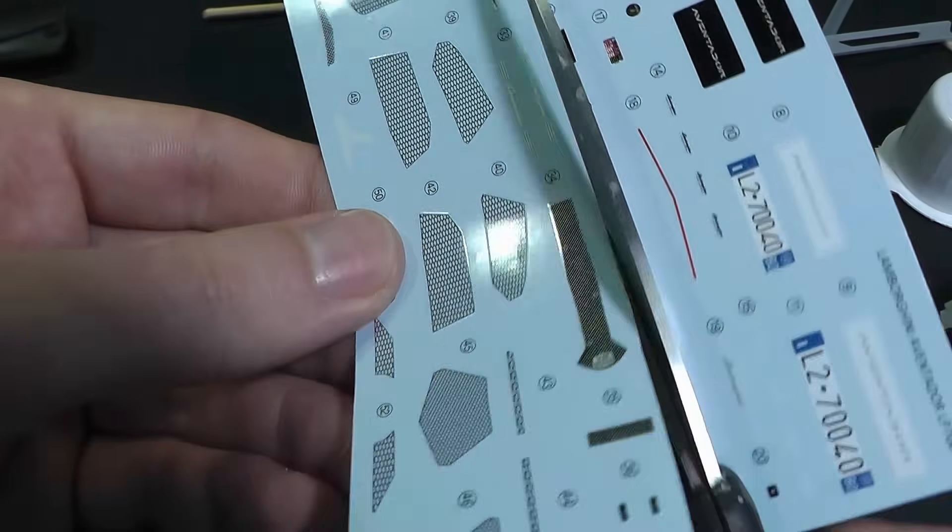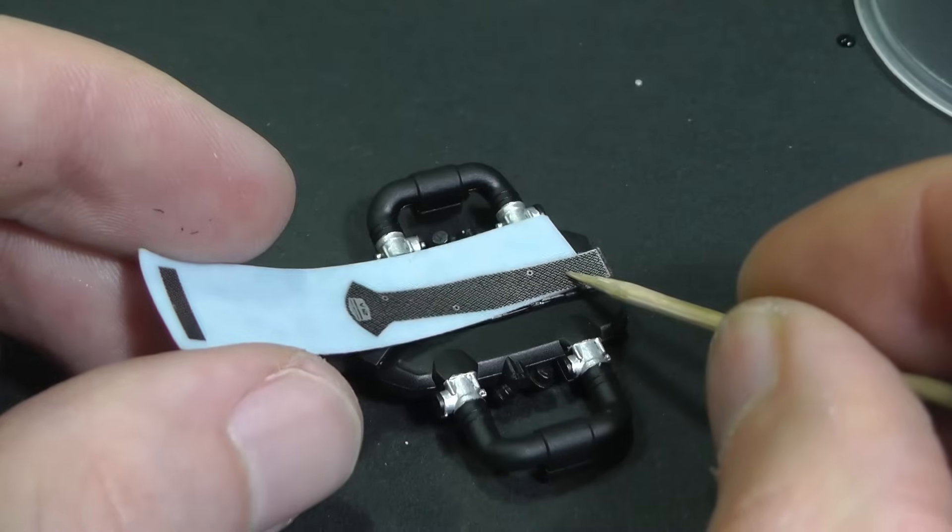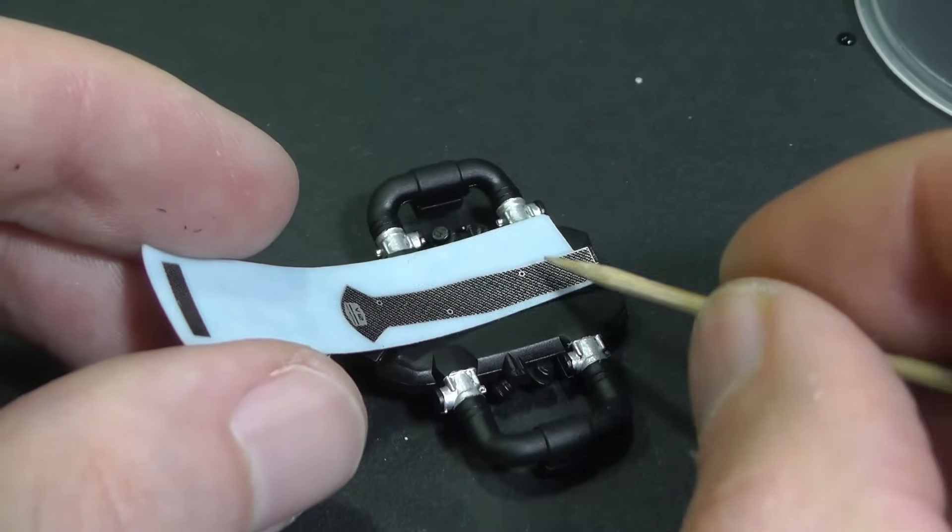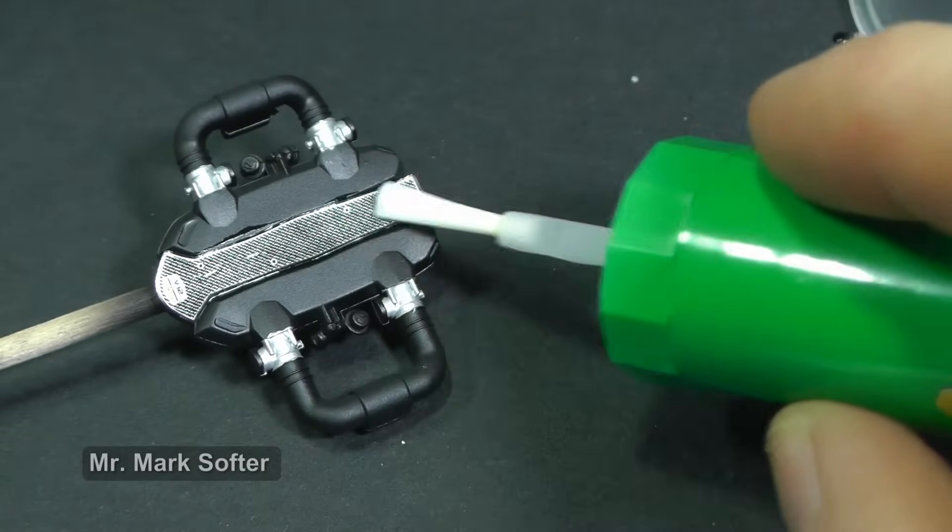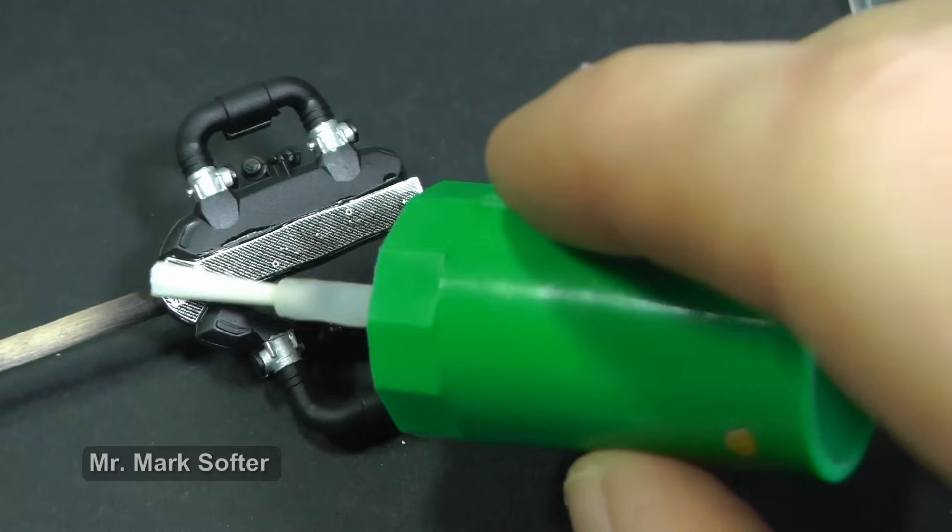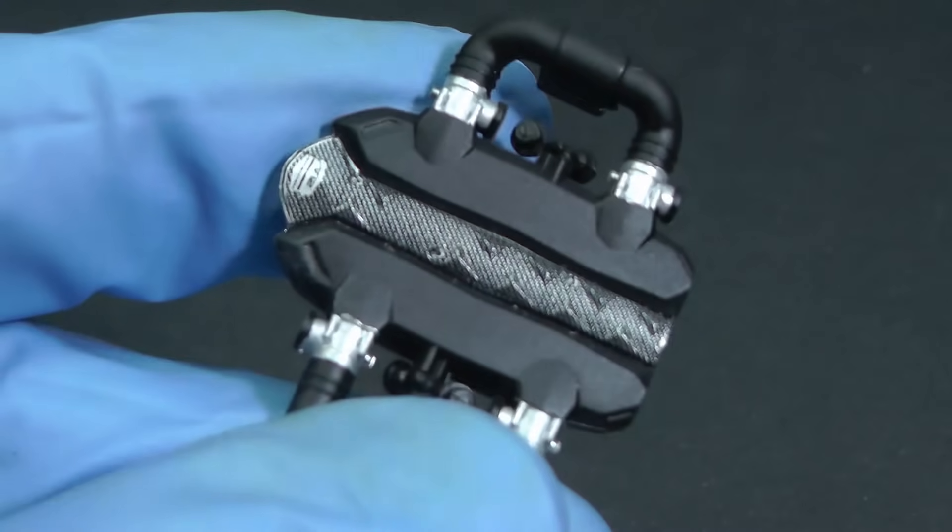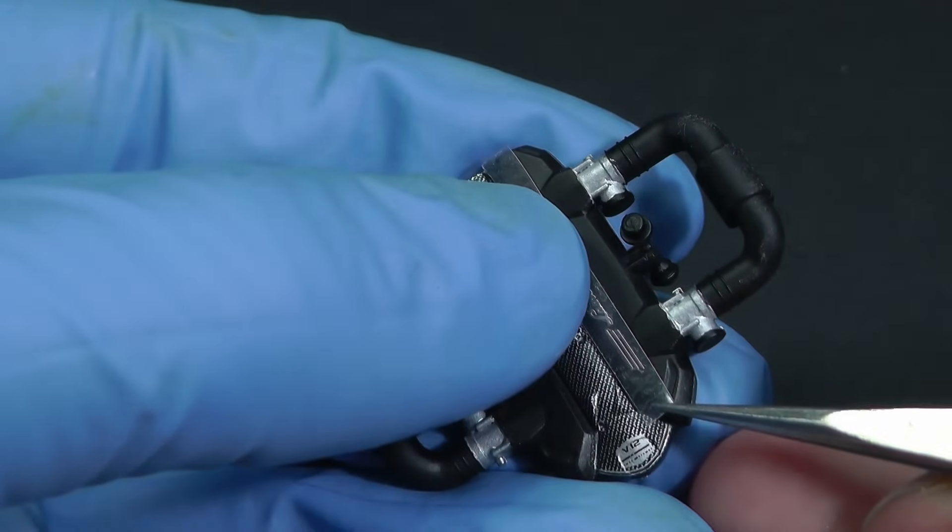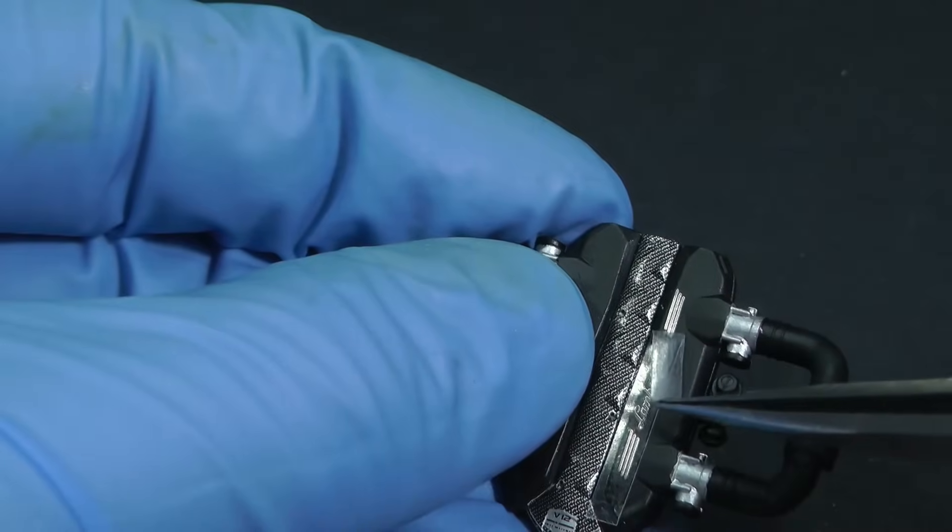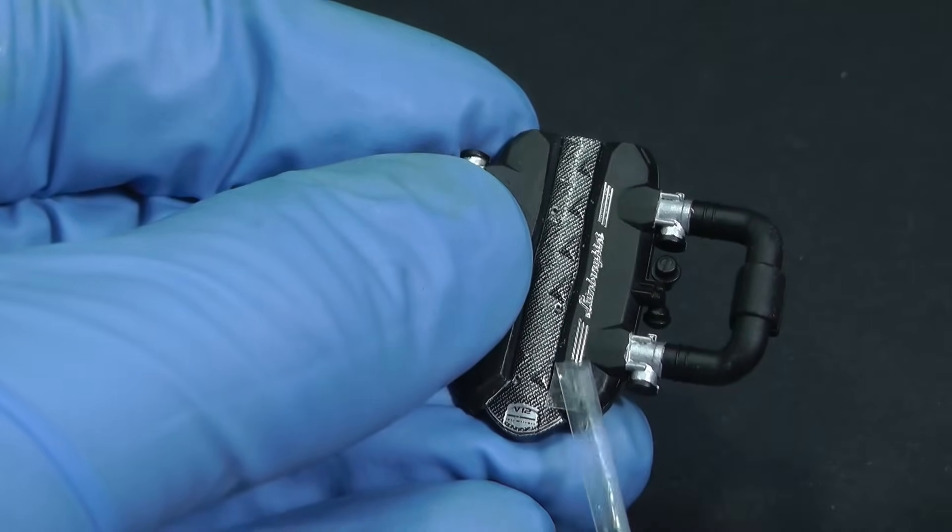Now, I apply water slide decals with a carbon texture on another engine part. The decals are quite thick, therefore you need to apply a lot of decal setter to set them properly and be patient. However, result worth it. The chrome Lamborghini label is from spare parts. It is self adhesive metal sticker and I apply it to dry reposition and then remove cover foil.